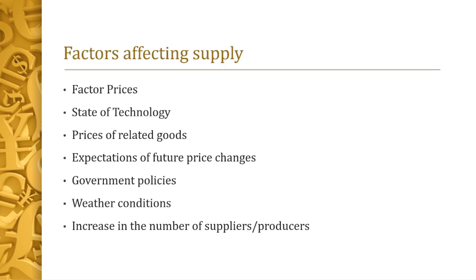Next is government policies. For example, if you are a manufacturer of hollow blocks and the LGU bans the quarrying of sand from rivers, you no longer have a source of raw materials, and that government policy induces a decrease in your ability to supply. Weather conditions such as typhoons, earthquakes, and other natural calamities also affect supply. Finally, an increase or decrease in the number of suppliers or producers largely affects the volume of supply.